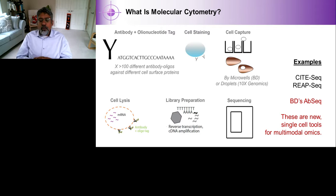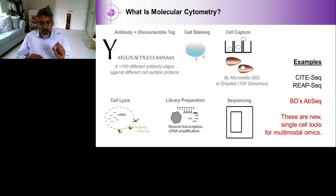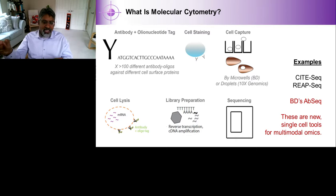Other people variously call it genomic cytometry or multimodal analysis. In this platform technology, what we're doing is replacing the fluorescent-tagged antibodies used in flow cytometry with antibodies that have oligonucleotide tags — they're tagged with sequences of bases. Because you have lots of different combinations of bases, you can have over 100 different antibody oligos targeted to different cell surface proteins. You can have a particular sequence tagged onto anti-CD3, a different sequence tagged onto anti-CD45RA, and in this way, you can multiplex and measure lots of different proteins at once.